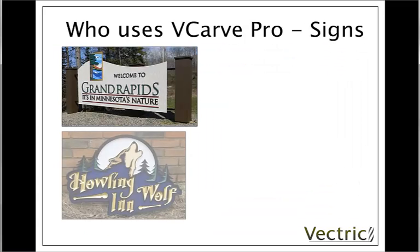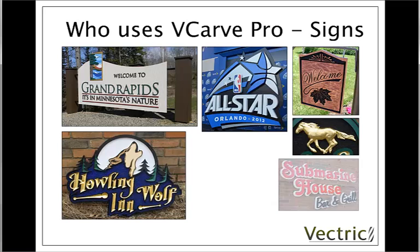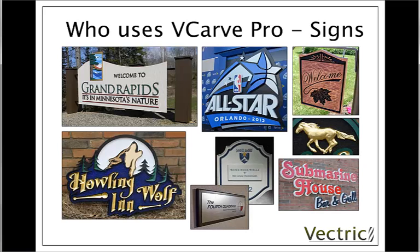On the next slide, we have a selection of sign-making examples, and you can see these vary from simple cut-out shapes, all the way through to parts that have detailed textured backgrounds, and even with the horse there, another imported 3D toolpath that's been combined with the other toolpaths in VCarve Pro. A great deal of flexibility with the types of materials and shapes that you can cut with the software and your CNC router.